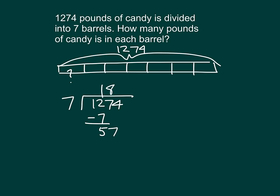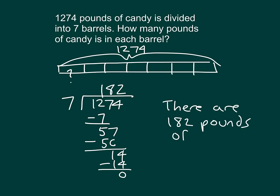Because 8 times 7 is 56, and 57 minus 56 is 1. We bring down the 4 for 14 ones. And when we divide that, we get 2, because 2 times 7 is 14. And 14 minus 14 is 0. So we can express our answer clearly. There are 182 pounds of candy in each barrel.